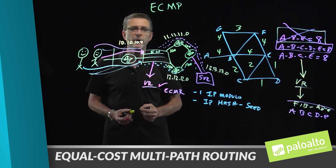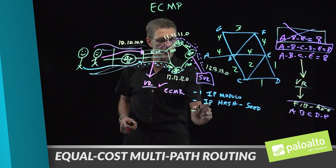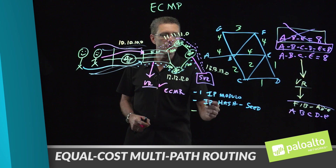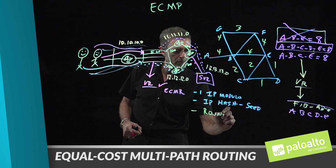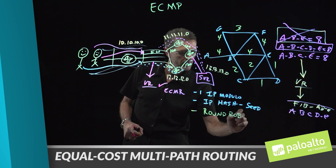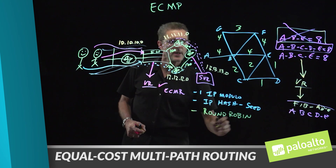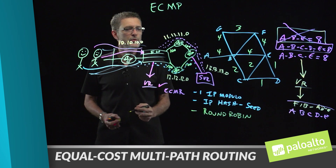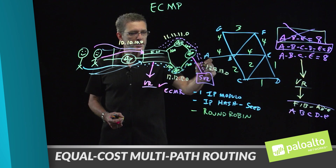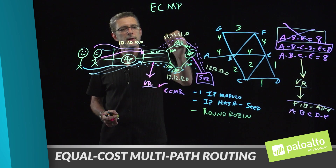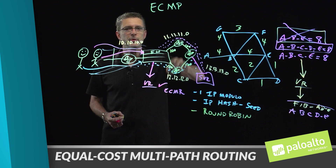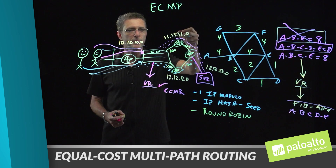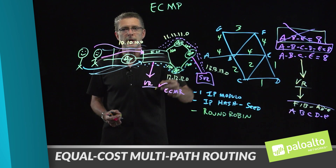There are two additional load balancing options available with ECMP, bringing the total to four. The third is a standard round robin, which simply sends one session across the first link, the next session across the second link, then back to the first — alternating first, second, first, second, and so forth.